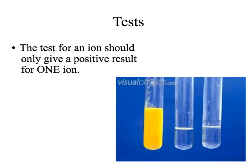In testing for any different ions, it is important that the test should only give one positive result. Therefore you will know which ion you have from your test. If you didn't have a unique result for each ion, there would be no point analysing the compound, as all you could say is that it could be ion A or it could be ion B. It is essential, therefore, that we get a definitive result.